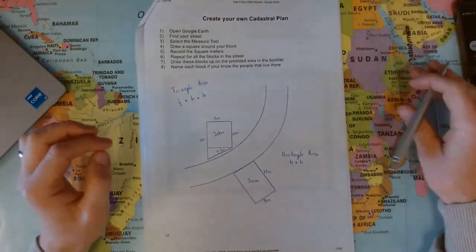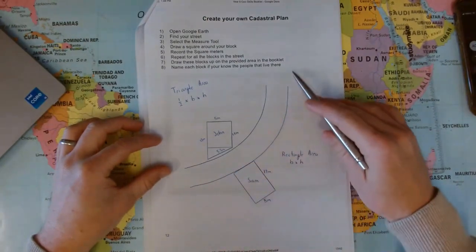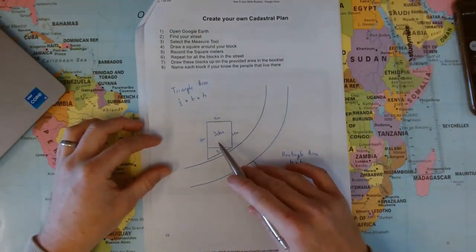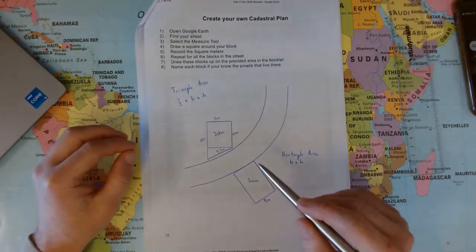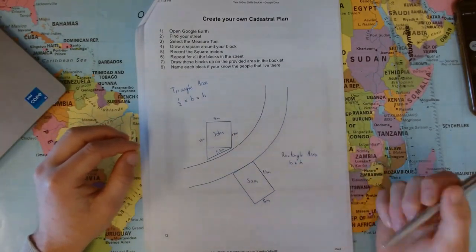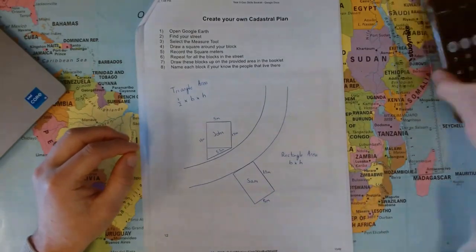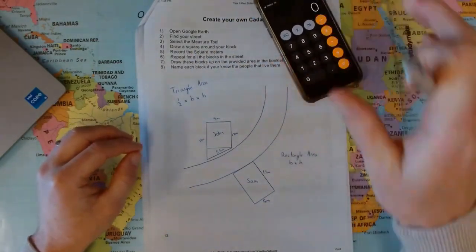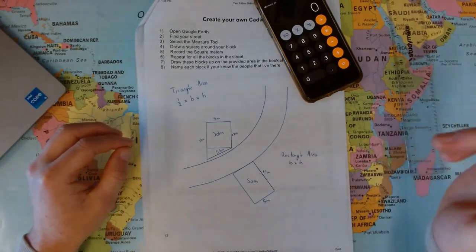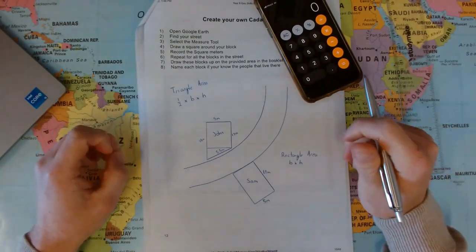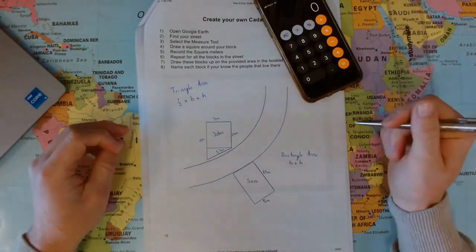So let's jump into it. Here is a street. On this street there are two blocks of land and they're both residential. One is owned by John and the other is owned by Sam. Over here I've got my phone, and you are allowed a calculator in this test. So let's start with Sam. A question that you may get in the assessment: